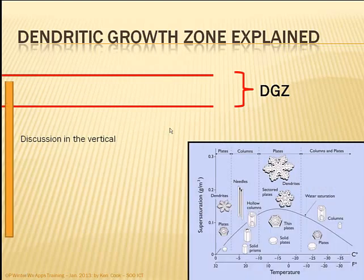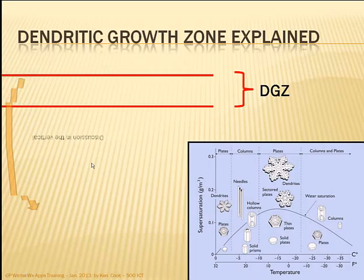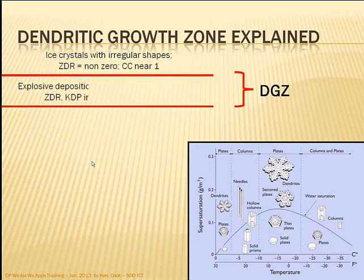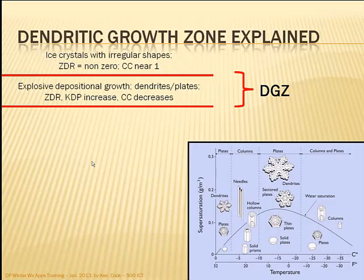Looking at what's occurring in the vertical — from the top of the atmosphere down to the surface — the red lines mark the dendritic growth zone. Initially we have ice crystals with regular shapes, non-zero ZDR (somewhat positive), and correlation coefficients near one because all crystals are uniform. As they fall into the dendritic growth zone, we get explosive depositional growth — mostly dendrites, some plates — growing very large very fast. ZDR and KDP start to go up, and correlation coefficient starts to decrease with this rapid growth.